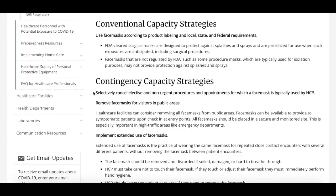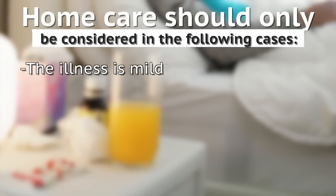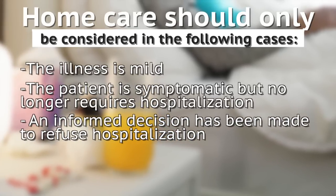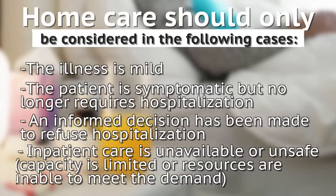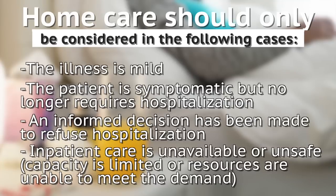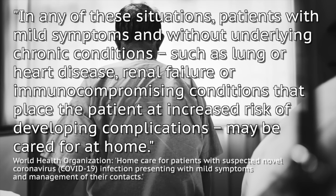Before we get to the 18 steps, home care should only be considered in the following cases: the illness is mild; the patient is symptomatic but no longer requires hospitalization; an informed decision has been made to refuse hospitalization; or inpatient care is unavailable or unsafe — meaning the capacity is limited or resources are unable to meet the demand for health care services. In any of these cases, the patient must not have underlying chronic conditions that place them at greater risk for developing complications, such as lung or heart conditions, renal failure, or other immunocompromising conditions.